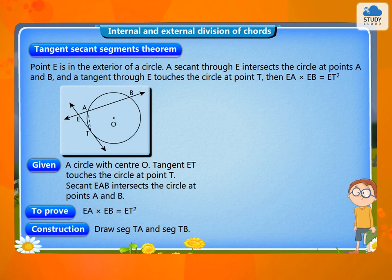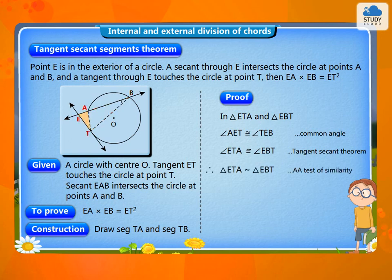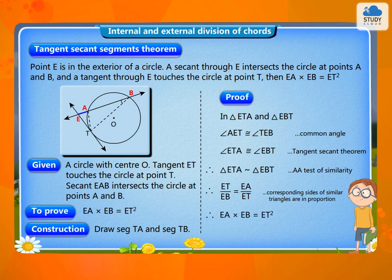Construction: draw segment TA and segment TB. Proof: In triangle ETA and triangle EBT, angle AET is congruent to angle TEB, and angle ETA is congruent to angle EBT. Therefore, triangle ETA is similar to triangle EBT. Therefore, ET/EB = EA/ET, and therefore EA × EB = ET².